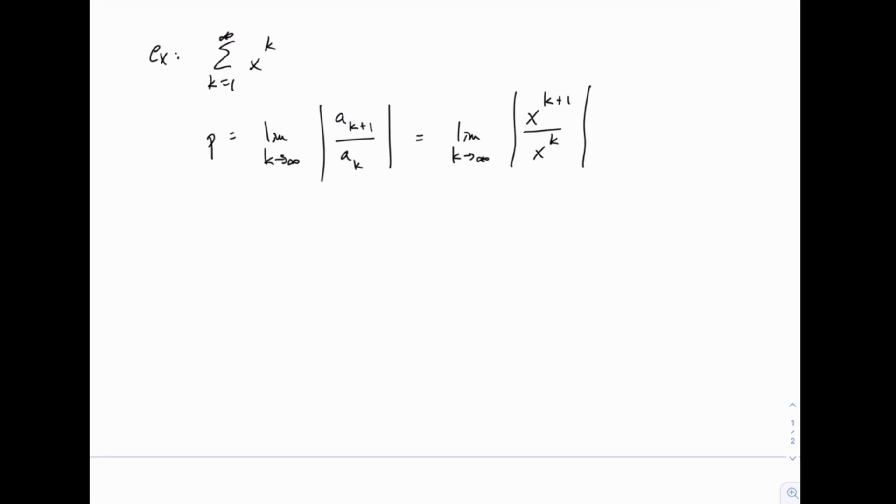Now this simplifies nicely. If you have x's on the top and the bottom, and you start canceling them, since the degree on the top is one higher, once you're done canceling, you'll be left with simply x inside the absolute value signs. Notice that when we're taking a limit as k goes to infinity, this expression doesn't involve k whatsoever. Which means that as k goes to infinity, that sees no change, and so the value of that limit is simply the absolute value of x.